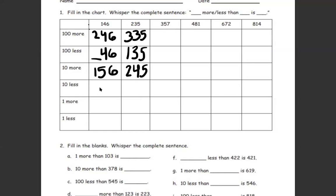Now let's look at the 10 less row. For 146 — one hundred, four tens, six ones — I want 10 less, so I take a set of 10 away. I'm left with one hundred, three tens, and six ones: 136. So 136 is 10 less than 146. For 235, I take a set of 10 away from the tens column. I still have two hundreds and five ones, but now only two tens — so 225 is 10 less than 235.